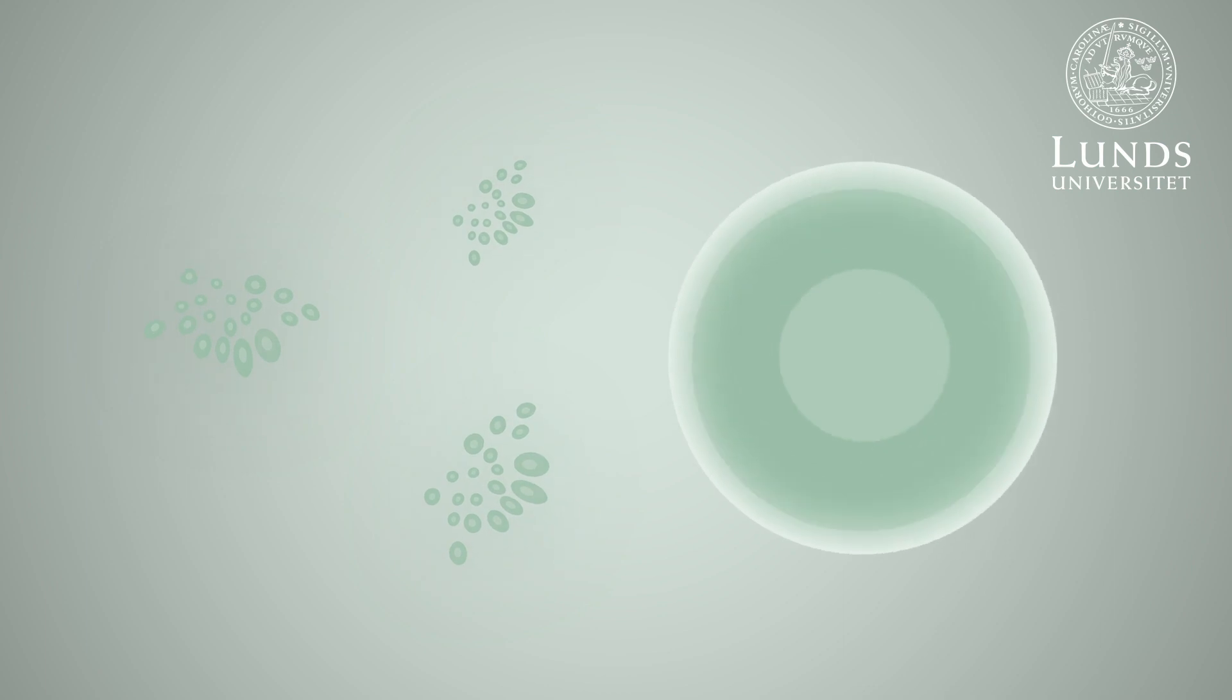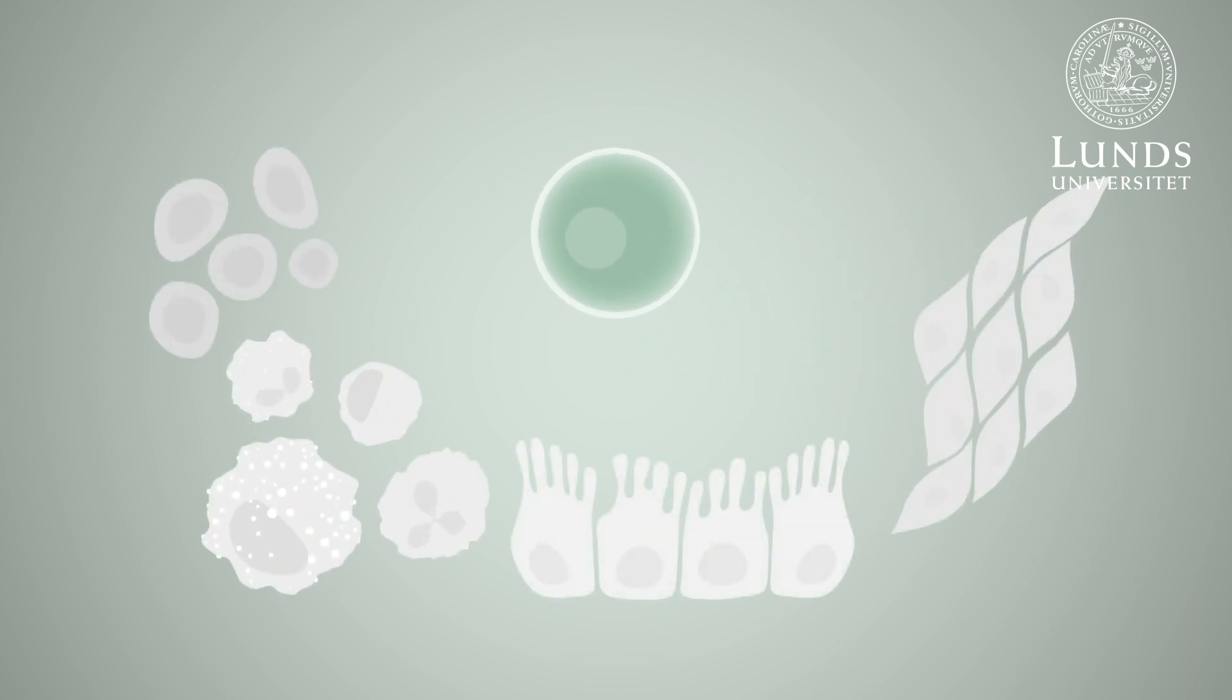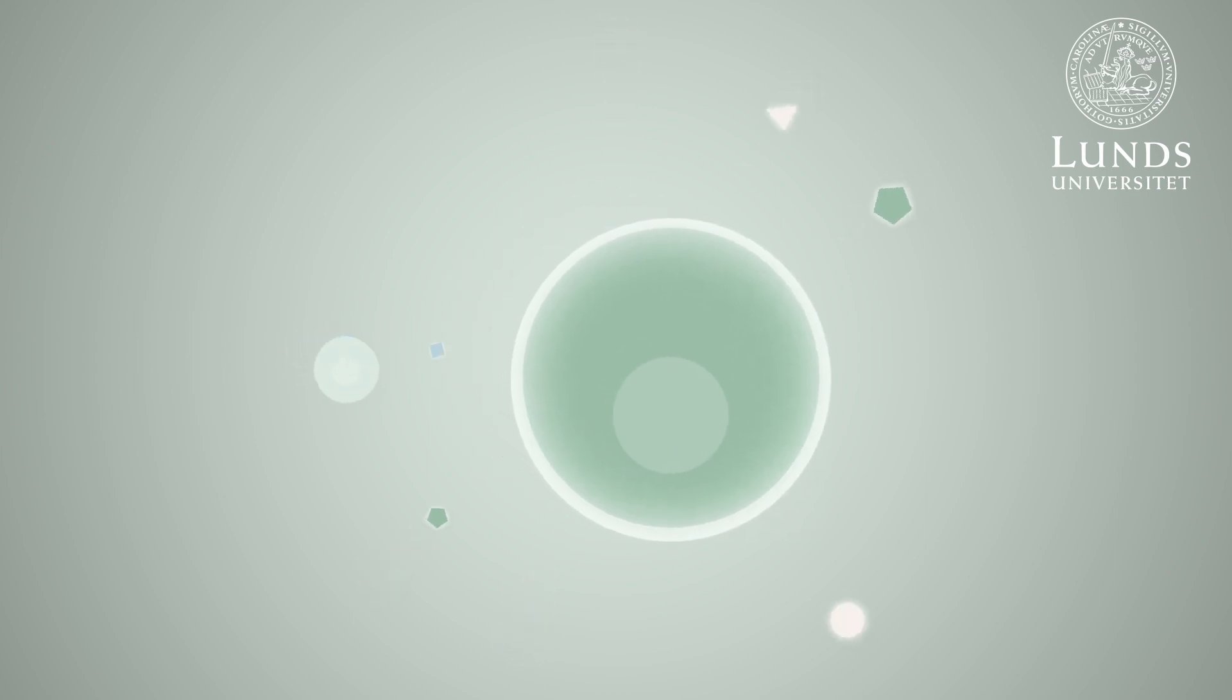These stem cells can duplicate an unlimited number of times and can be differentiated to become all of the body's different cells and tissues. The type of cell they develop into depends on the signals they receive and when.